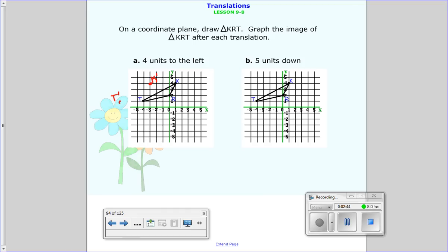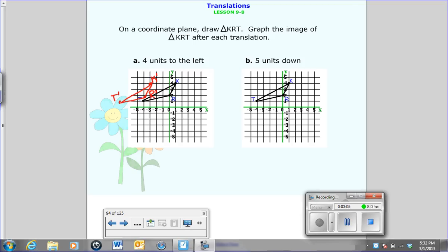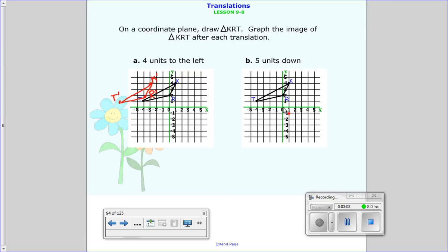And then R, 4 units to the left, 1, 2, 3, 4. There we go, connect the dots, and we're done. Go ahead and do B now. You're going to transform it by going 5 units down, so make the image of it. Pause me now. Alright, and you'll notice right away 5 units down, it should look something like that. So there we go, we have all our images.